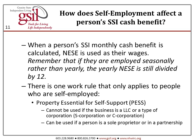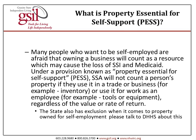How does self-employment affect a person's SSI cash benefit? When a person's SSI monthly cash benefit is calculated, NSEE is used as their wages. Remember that if they are employed seasonally, the yearly NSEE is still divided by 12. There is one working rule that only applies to people who are self-employed: Property Essential for Self-Support (PESS). PESS cannot be used if the business is an LLC or a type of corporation, but can be used if a person is a sole proprietor or in a partnership. Under PESS, Social Security will not count a person's property if they use it in trade or business — for example, inventory — or use it for work as an employee — for example, tools or equipment — regardless of the value or rate of return. The State also has an exclusion for property owned for self-employment; please talk to the Department of Health and Human Services about this.